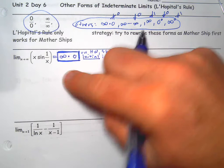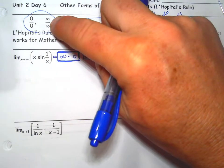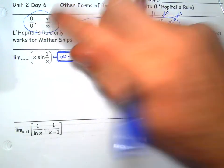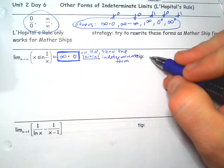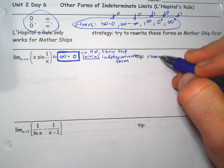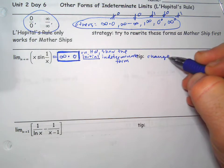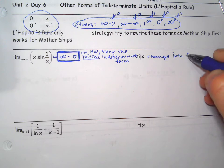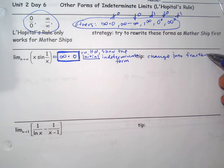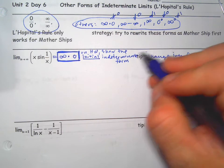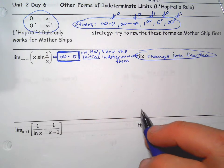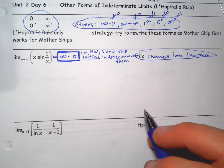We want to somehow get to one of those forms, so we want to change this multiplication into a fraction. Hopefully when we do that we get zero over zero or infinity over infinity. In fact, you can do it multiple ways — one way will lead to one form and another way to the other.